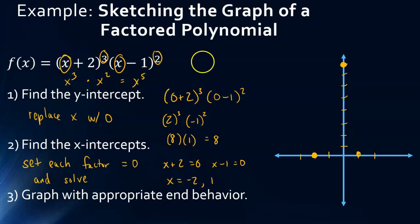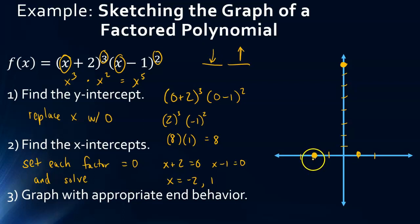So what does that mean for end behavior? The fact that it's a positive leading term means the right side of the graph goes up. The fact that it's an odd exponent means the left side goes in the opposite direction. So I know the left side of the graph goes down and the right side goes up.